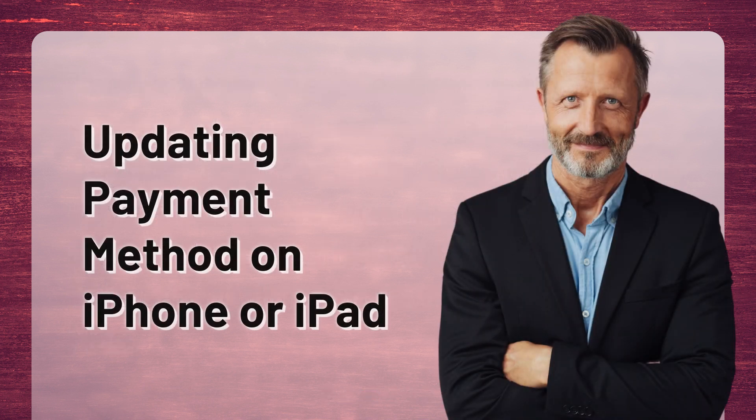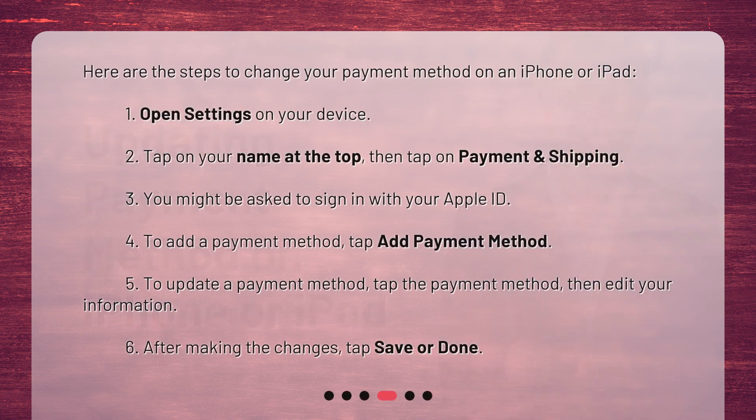Updating Payment Method on iPhone or iPad. Here are the steps to change your payment method on an iPhone or iPad. 1. Open Settings on your device. 2. Tap on your name at the top, then tap on Payment and Shipping. 3. You might be asked to sign in with your Apple ID. 4. To add a payment method, tap Add Payment Method. 5. To update a payment method, tap the payment method, then edit your information. 6. After making the changes, tap Save or Done.